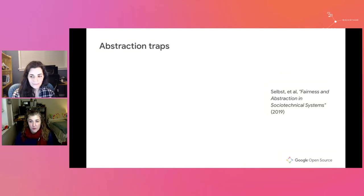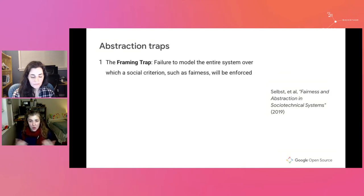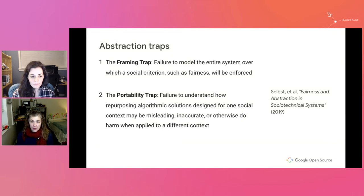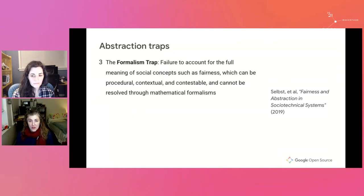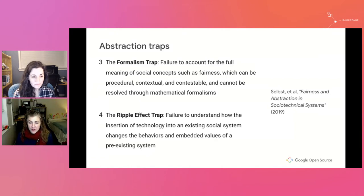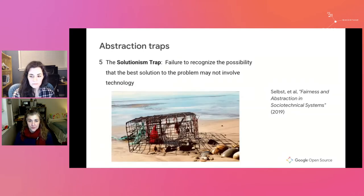The first abstraction trap is the framing trap: when we fail to model an entire system over which a social criterion will be enforced. Second is the portability trap: when we fail to understand how repurposing algorithmic solutions designed for one social context may be misleading, inaccurate, or otherwise do harm when applied to a different context. Third is the formalism trap: the failure to account for the full meaning of social concepts, which can be procedural, contextual, and contestable, and cannot be resolved through mathematical formalisms. Next is the ripple effect trap: when you fail to understand how insertion of a technology into an existing social system changes the behaviors and embedded values of a pre-existing system. Finally, the solutionism trap: when we fail to recognize that the best solution may not involve technology at all.